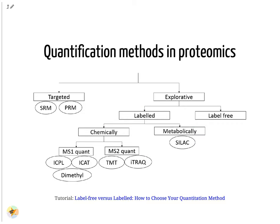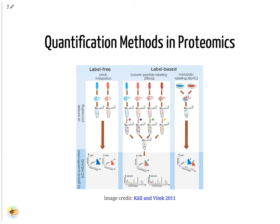Different quantification approaches exist in MS-based proteomics. In explorative proteomic approaches, relative quantification methods are applied to compare the amount of proteins between different samples. Label-free and label-based methods exist. Labels add specific mass tags to peptides of different samples via metabolic or chemical ways. In label-free approaches every sample is measured separately, and protein amounts are compared between measurements. Chemical labeling techniques add a mass label to the digested peptide; afterwards the samples are mixed and measured in one run. Depending on the labeling technique, up to 16 different labels exist.